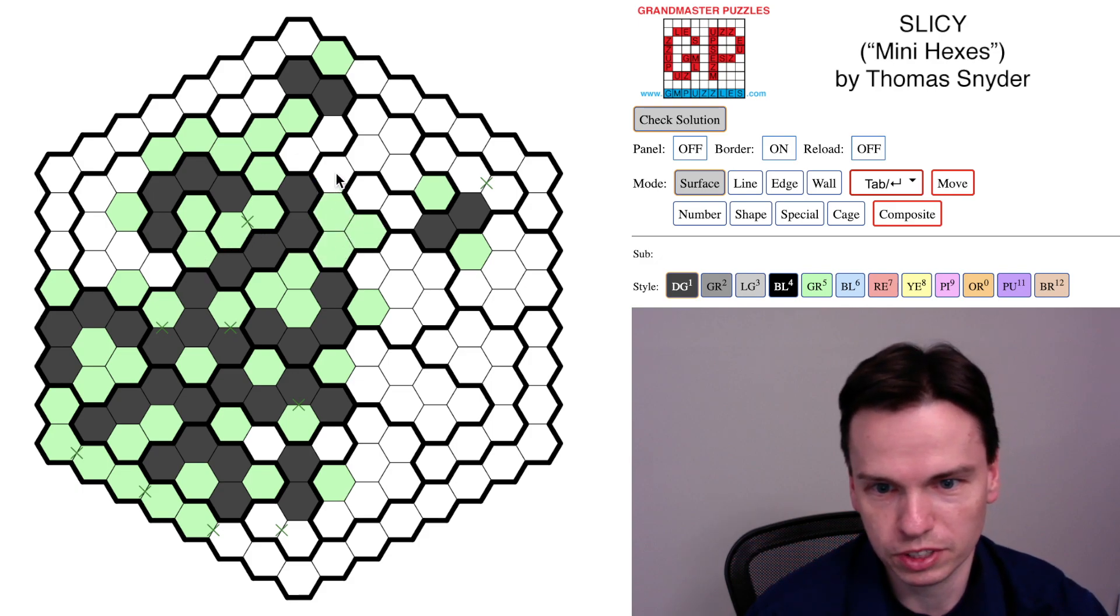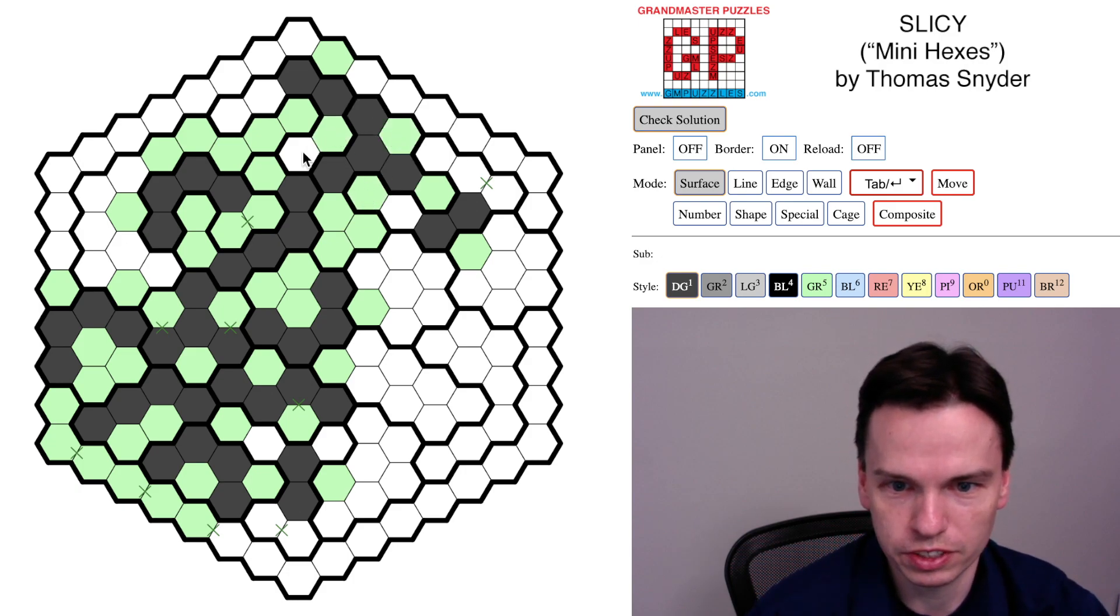That now limits this region, which now actually has just five cells, so it always has to take these that reach out to it. It can only take one of these two, so it takes this one, always take this one. Puts in a Y shape, these get marked off. I finish this L up top.